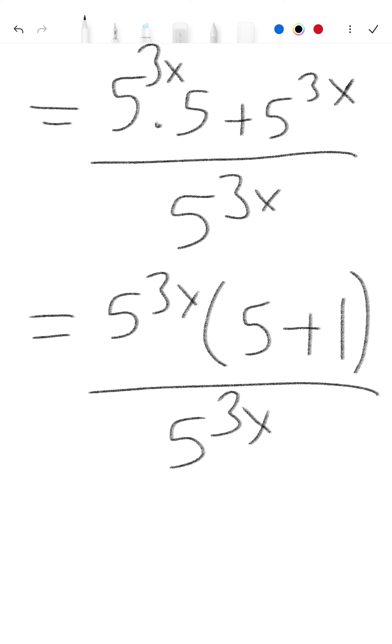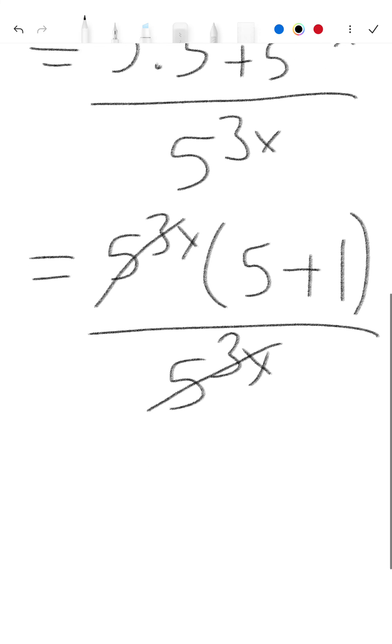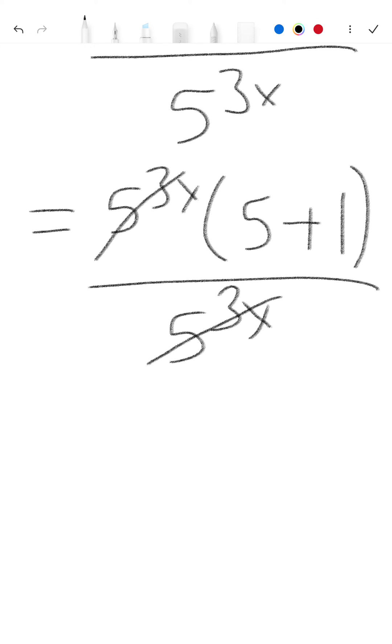Now 5 to the power 3x divides 5 to the power 3x, and when we divide the value is 1. So here is 5 plus 1, and 5 plus 1 is 6. Our answer is 6.